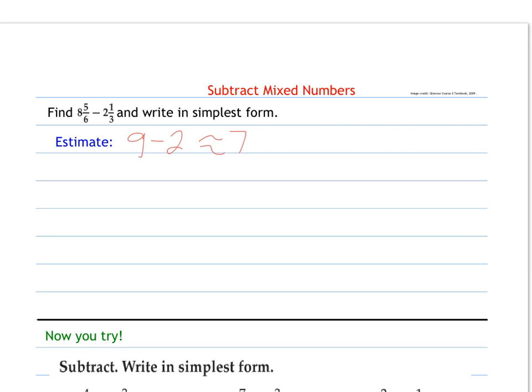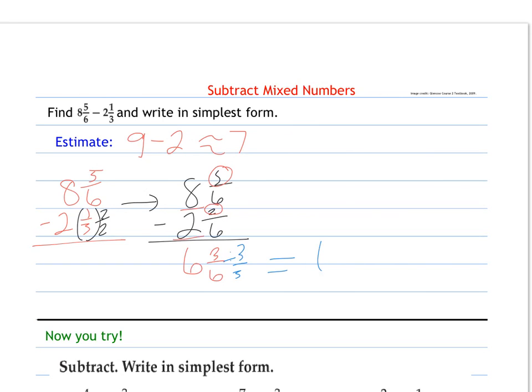So I need a common denominator. 8 and 5 sixths, we're taking away 2 and 1 third. We're going to change this to have a denominator of 6. So I have 8 and 5 sixths, minus 2 and 2 sixths. Now that they're common denominators, I can subtract 2 from 5, which is 3, keeping my denominator, taking 2 from 8, which is 6. Then I simplify, since these share a factor of 3, and I get 6 and 1 half. Good estimate.